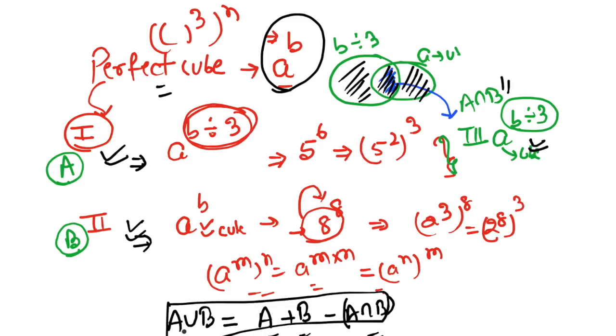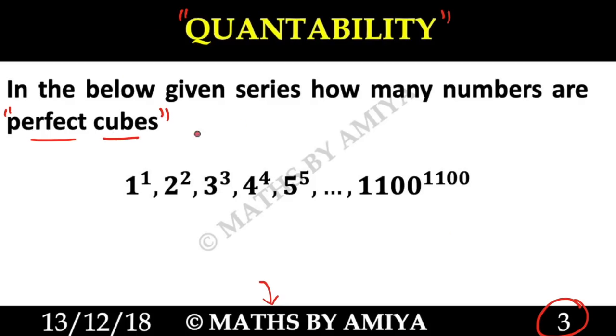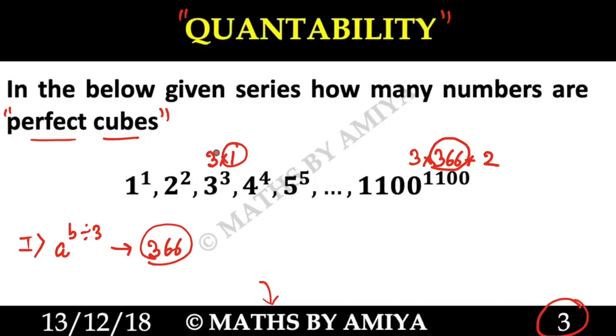Now solve our question. We need to find perfect cubes. Case 1: A raised to power B, power is divided by 3. Our first power which is divided by 3 is 3. From 3, 6, 9... to 1100, it's (1100-3)/3 + 1, which gives us 366 perfect cubes when the power is divided by 3.